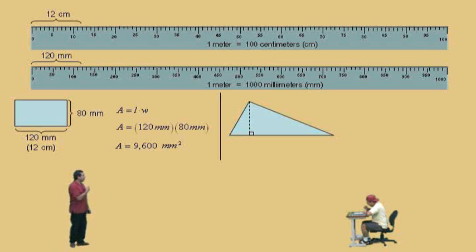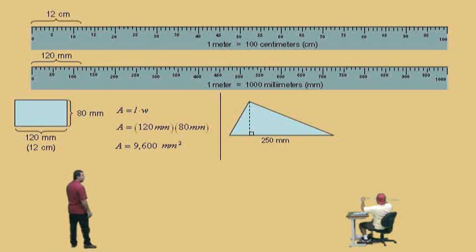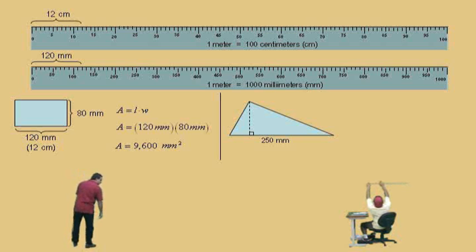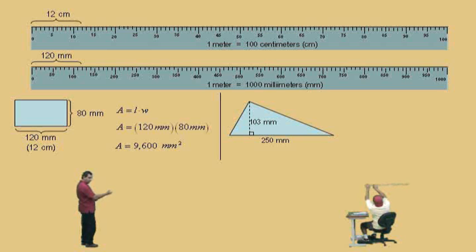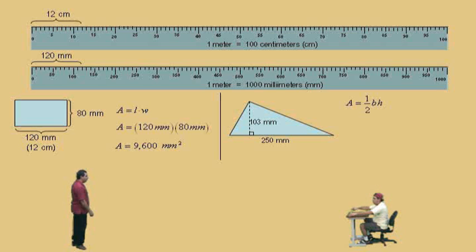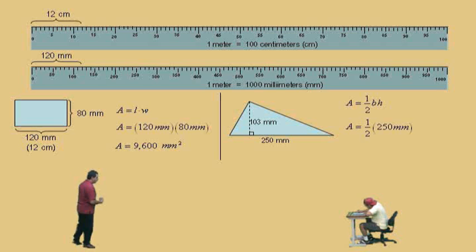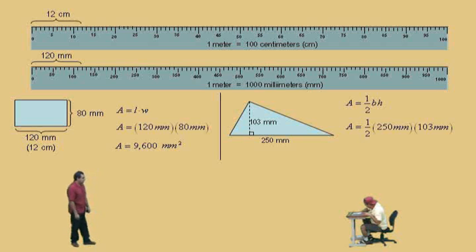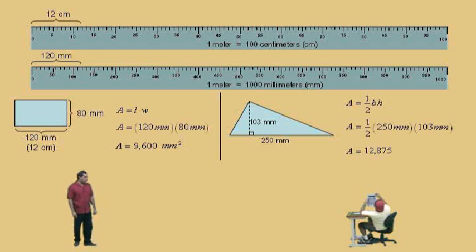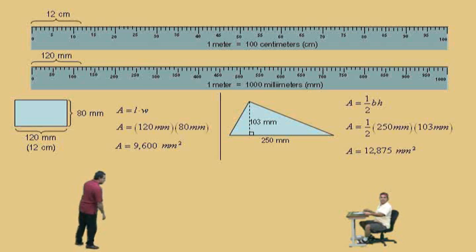Let's do a triangle. This triangle has a base of 250 millimeters and a height of 103 millimeters. Area is one-half base times height. The base is 250 millimeters, the height is 103 millimeters — put the numbers in your calculator. The answer is 12,875 millimeters squared. There are some problems with area.